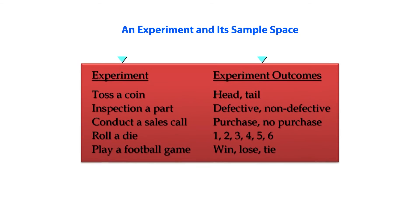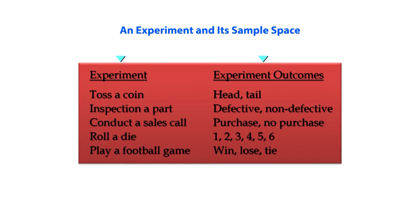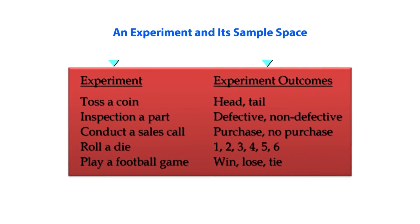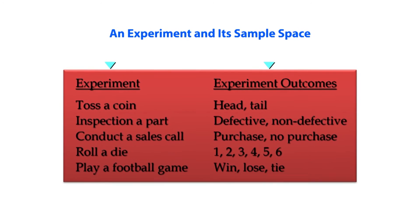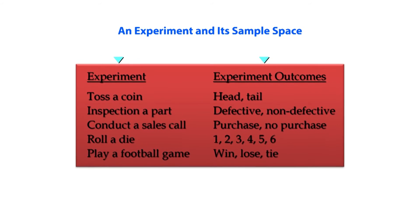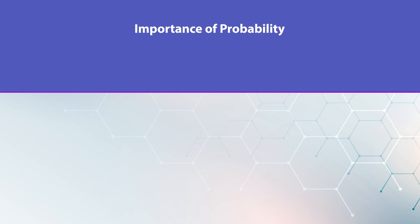For an experiment such as tossing a coin, the experiment outcomes are head or tail. Inspecting a part gives outcomes of defective or non-defective. Conducting a sales call gives outcomes of purchase or no purchase. Rolling a die gives outcomes of 1, 2, 3, 4, 5, or 6. Playing a football game gives outcomes of win, lose, or draw.